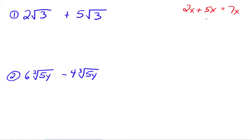This is very similar. We're going to call them like radicals. That's the phrase — like radicals. That means the radical parts, the square root of 3 here and the square root of 3 over here, have to be exactly the same in order to be like radicals. If this was the square root of 7 and this was the square root of 3, those are not like radicals, so we won't be able to add them. Also, if we have the cube root of 3 and the square root of 3, those are also not like radicals — even though the radicand parts are the same, one's a square root and one's a cube root, so you cannot add them together.